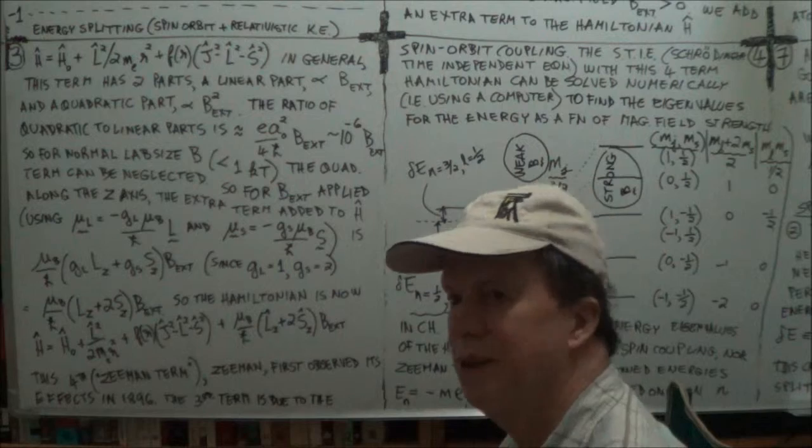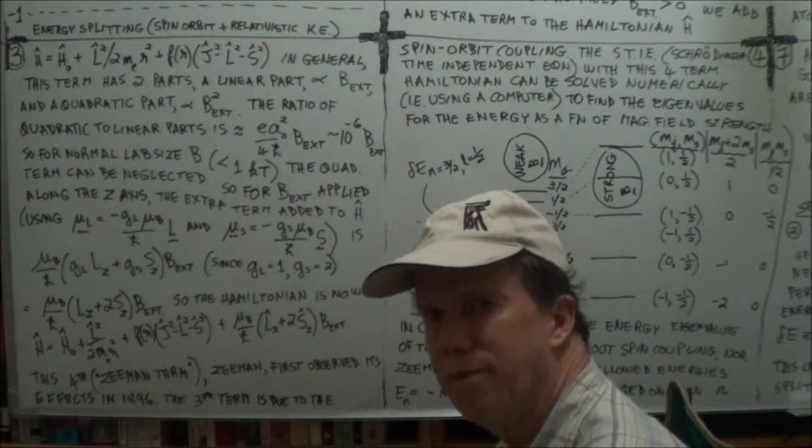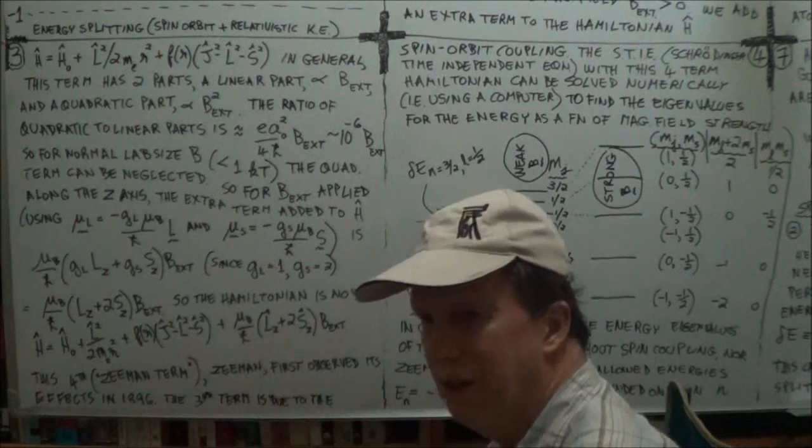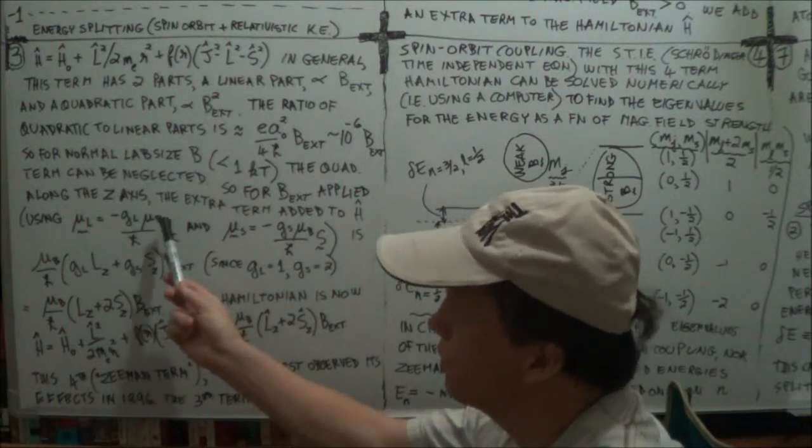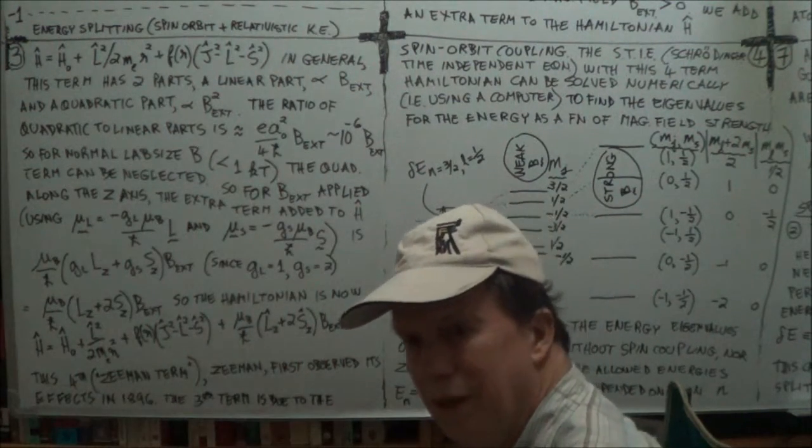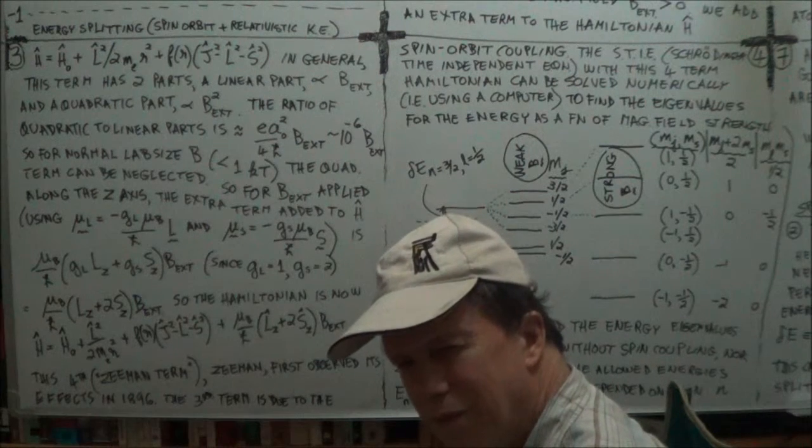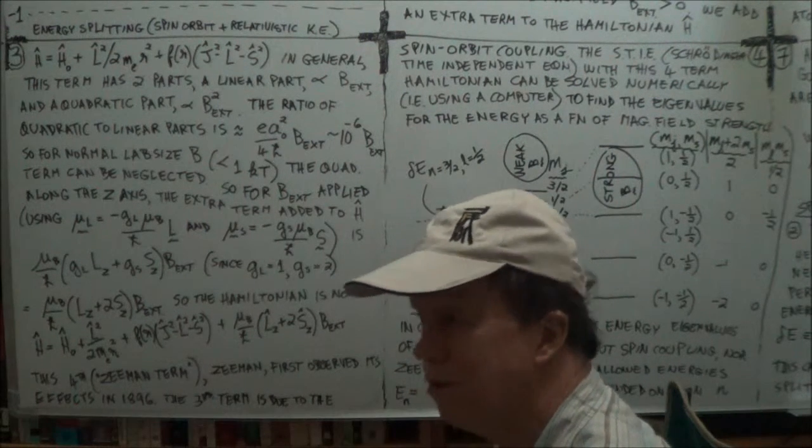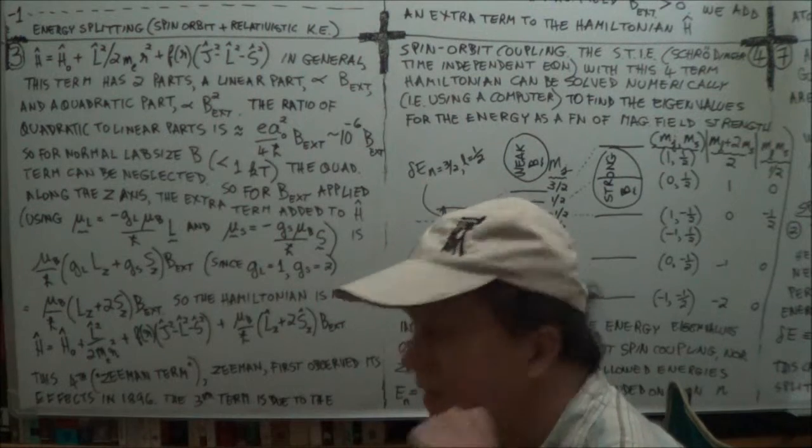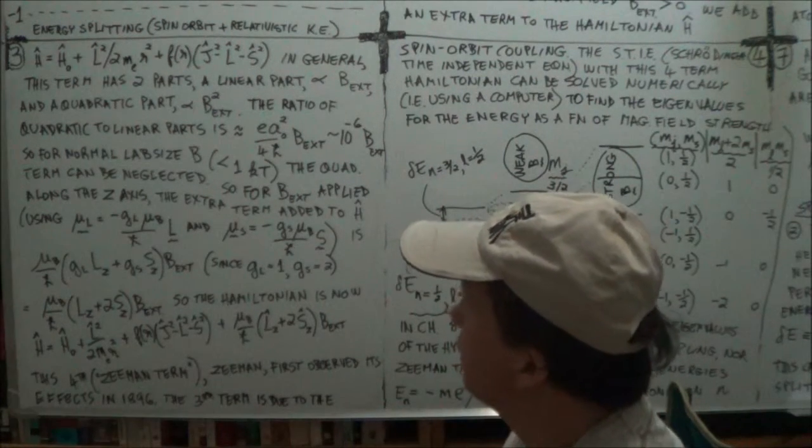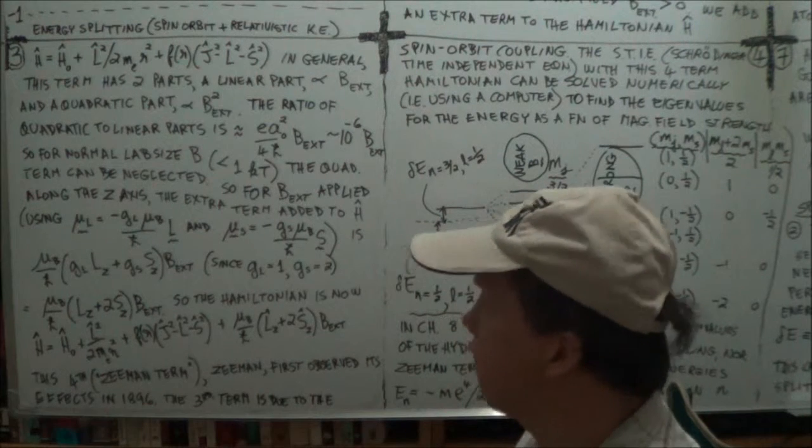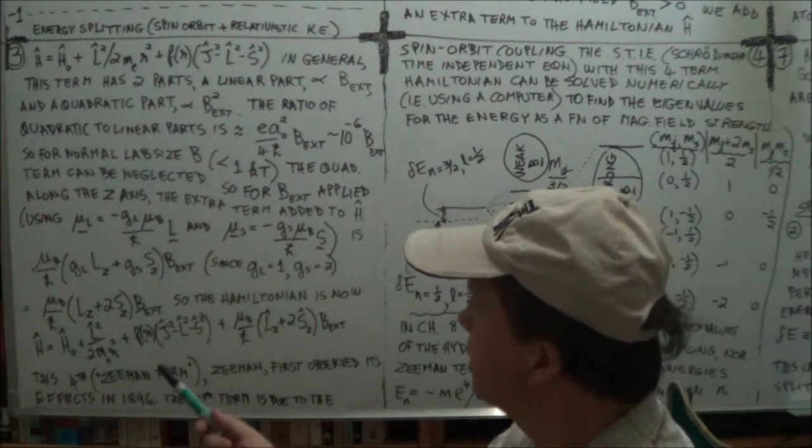The mu B here is the Bohr magneton. It's just a product and division of various constants. It comes out of Bohr's original theory from 1913, the original model of the atom that caused such a sensation in the early 1900s.